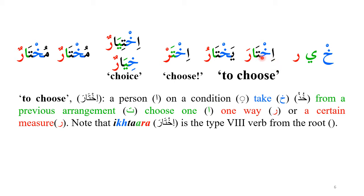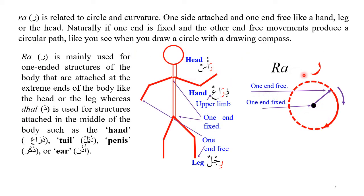The ta inserted between the first and second root letters in 'ikhtar' indicates several things: first, the choice between two things; and second, a previous engagement. So you are choosing based on something that happened previously — a known thing where you make a choice based on prior knowledge. This is very intelligent, and you can understand each of these letters very easily if you approach them this way.